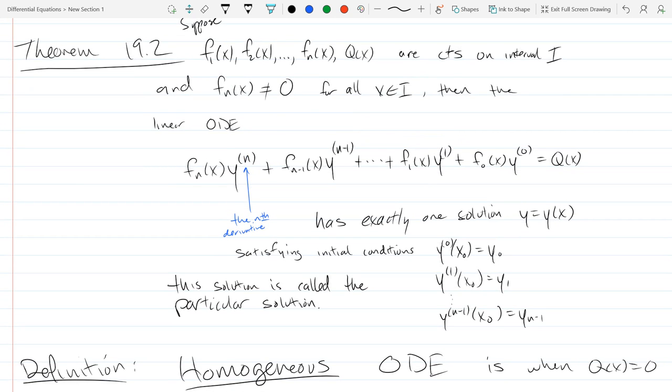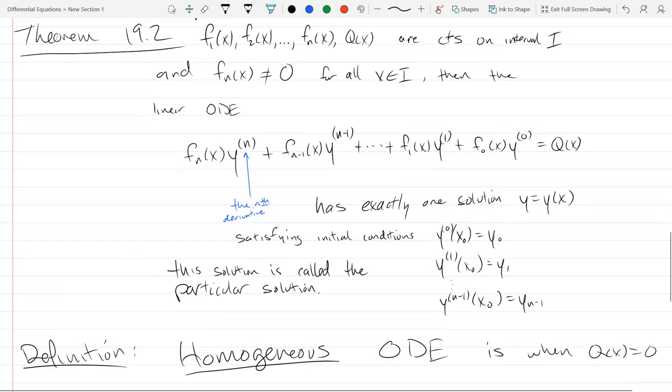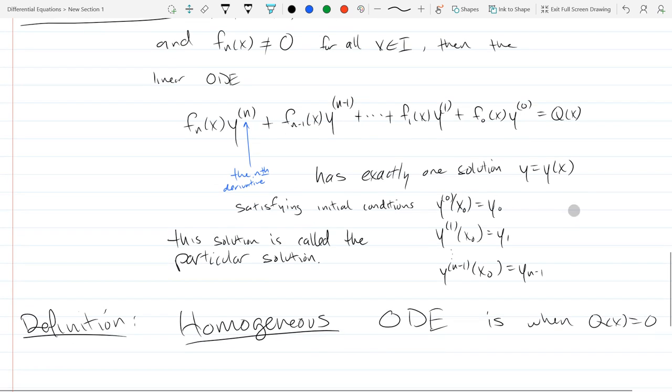So there's a homogeneous ODE. Is of the form basically when q of x equals zero. So if you have your all of your y derivatives on one side and your part that has no y's in it or y primes. It doesn't appear. That's what this means. So it's homogeneous when everything that doesn't have a y is zero.